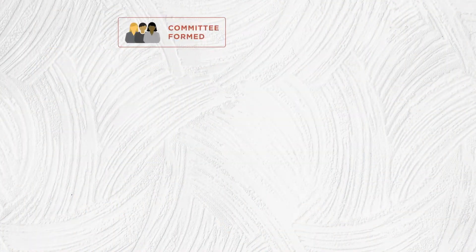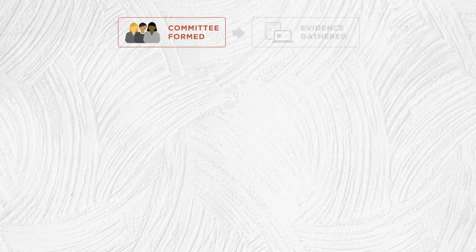Once a claim of research misconduct is made, a committee is formed to determine if misconduct has actually occurred. Evidence is collected and sequestered, which could include items such as hard drives, data sheets, photos, and interviews.